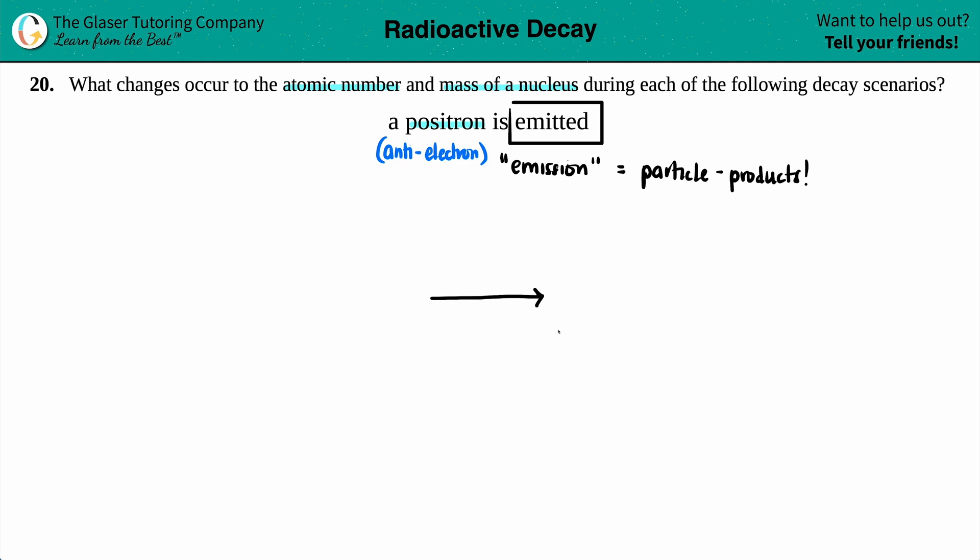So let's write our nuclei notation, which is the three boxes, and let's find out what the positron is all about. Positron. Now, since a positron is an anti-electron.